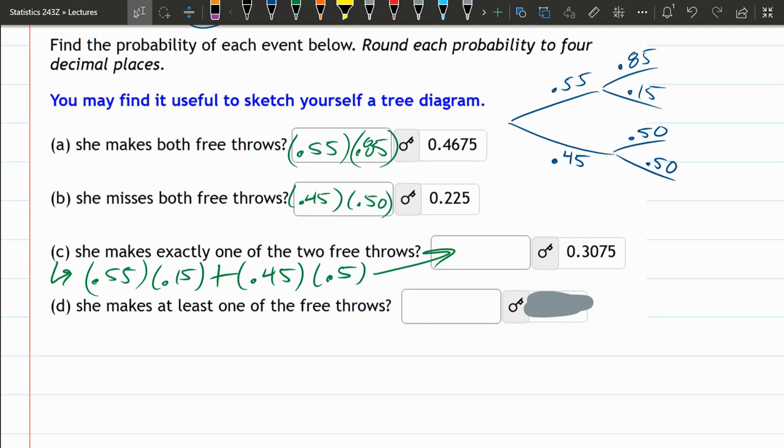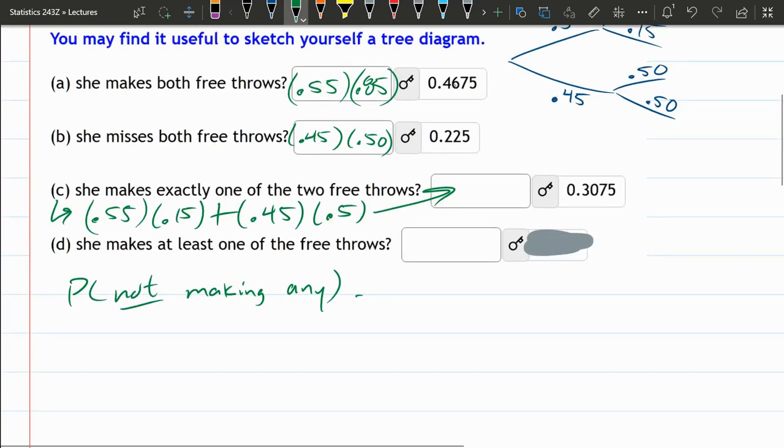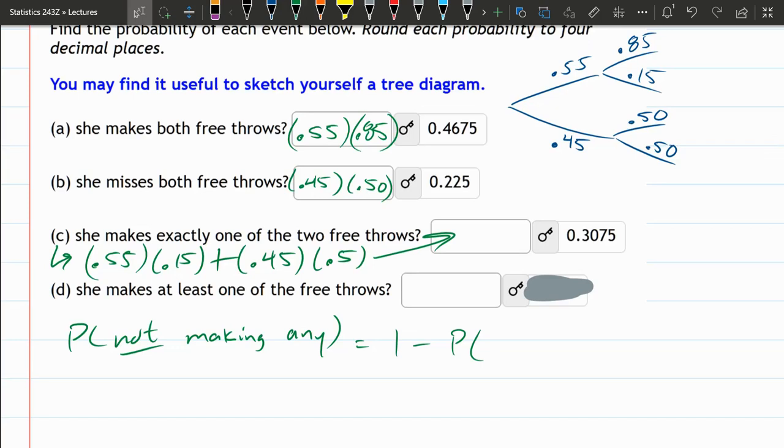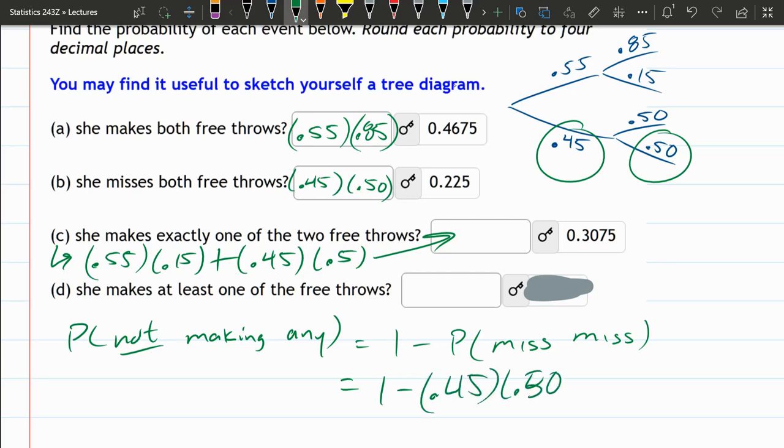Or, makes at least one is the opposite of making zero. Probability of not making any is one minus the probability of missing both. So, probability of miss and miss is .45 times .50, and that will go right here.